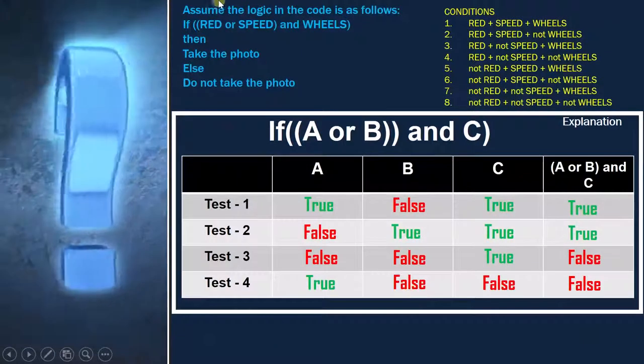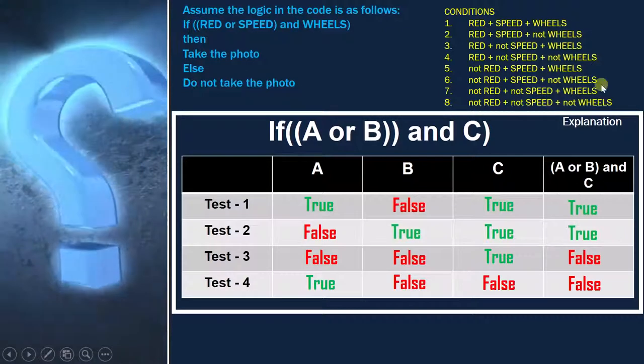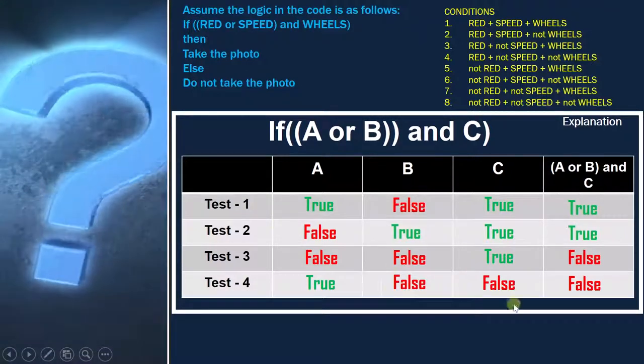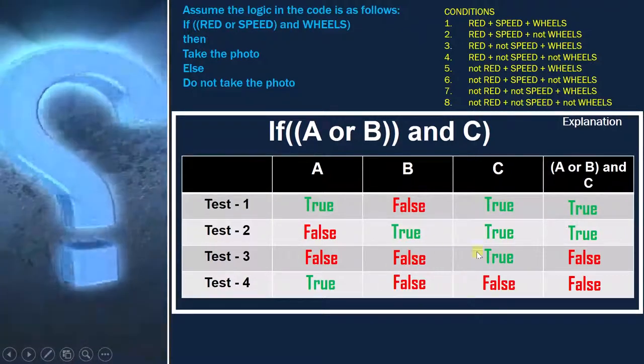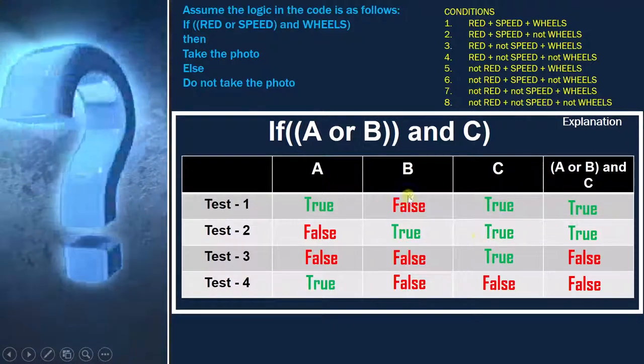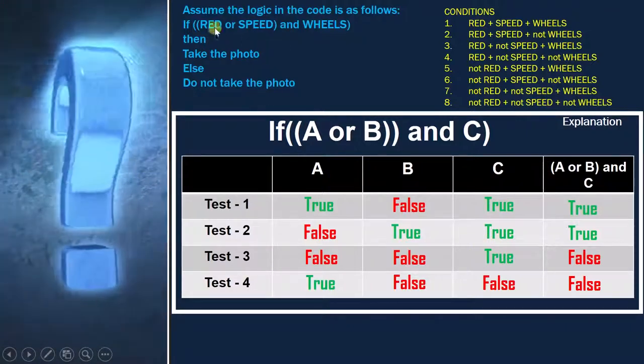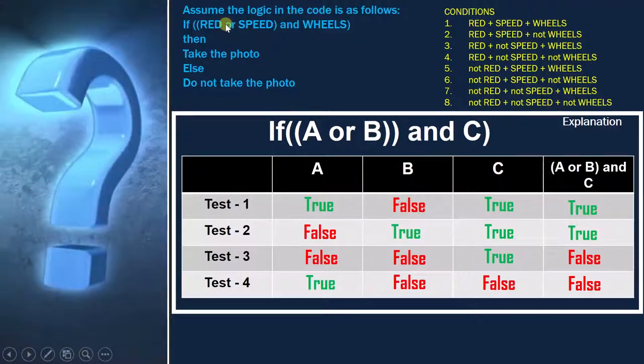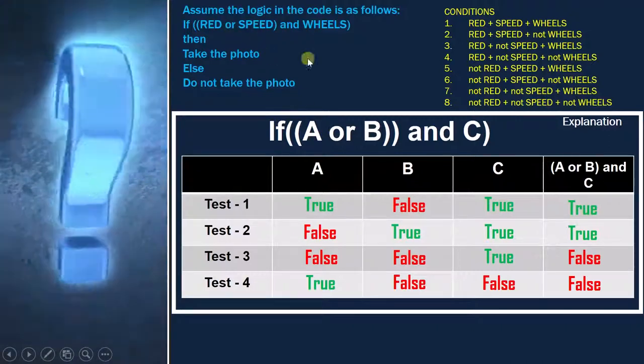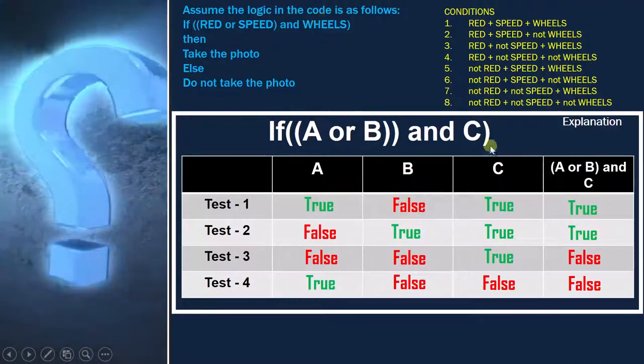So now let's try to analyze the code and the condition and this is the table which we have drawn in the last video. So if you see these conditions they are the same. Here it is red, it is A here, R. Speed is B, Wheels is C.